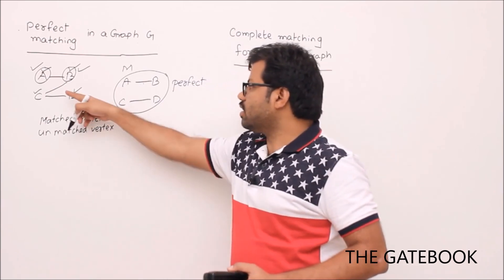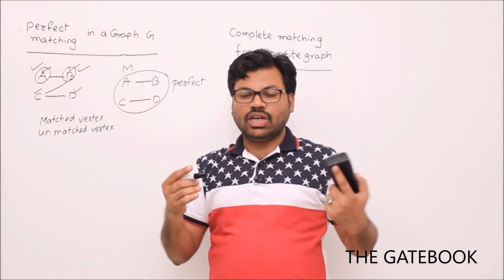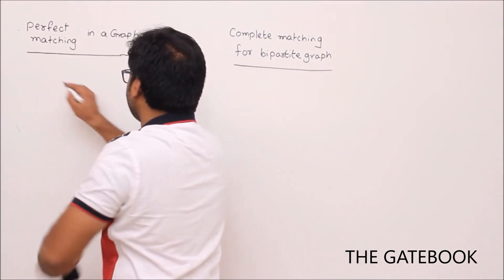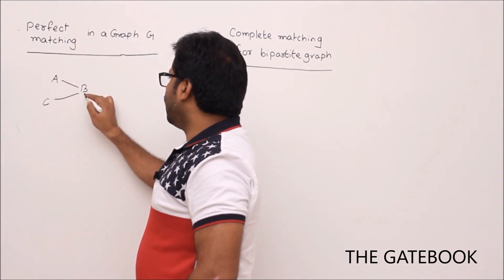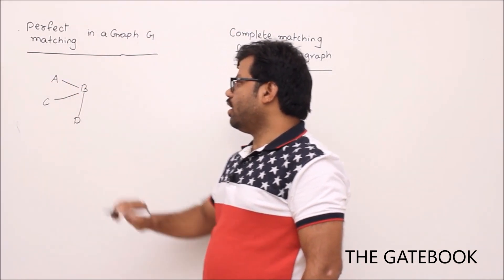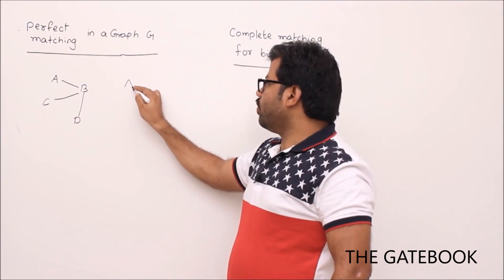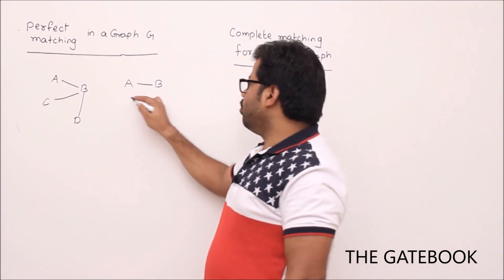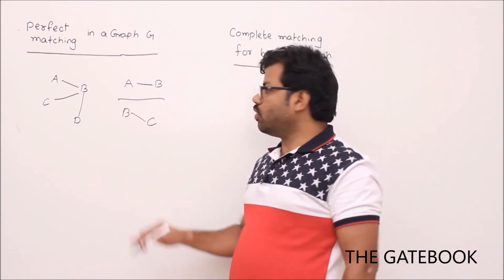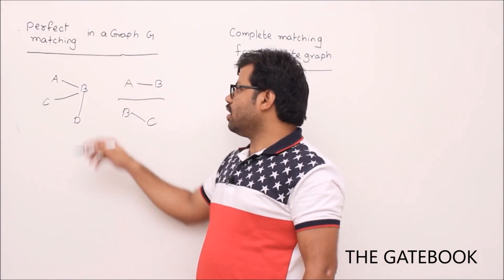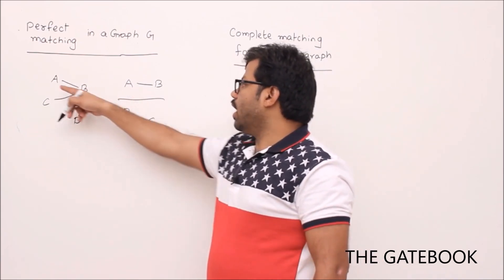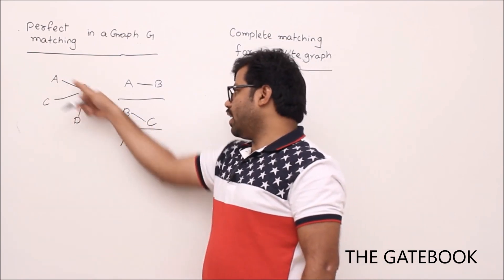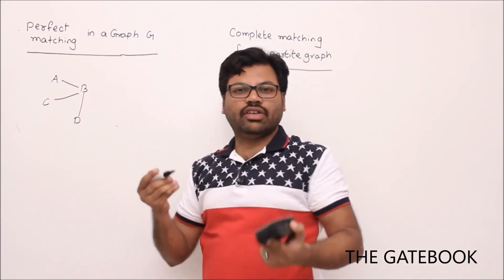A graph may have at least one perfect matching — like the matching a-b, c-d here. But there are some graphs where, whatever way you try, you don't get a perfect matching. For example, consider the graph with edges a-b, b-c, and b-d. If you try matching a-b, you can't add any other edge. If you try b-c, that's also not perfect. Whatever way you try, you can't achieve a perfect matching because every vertex needs to be matched, but you can't include all vertices simultaneously.